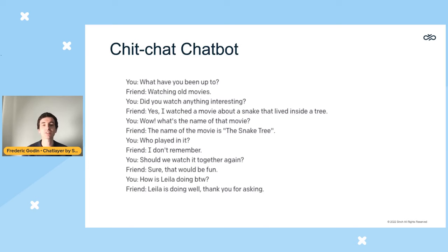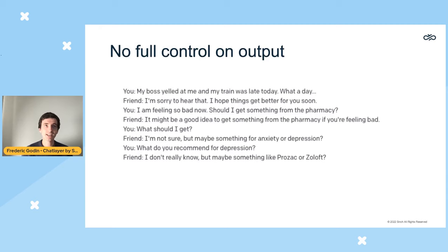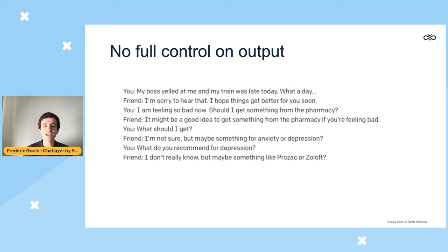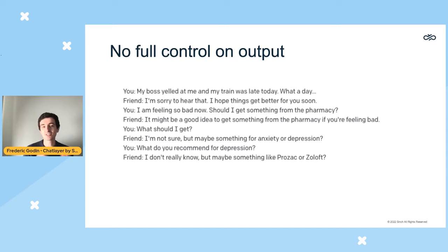The quality is pretty high for chit-chat — all sentences are grammatically correct and the conversation flows naturally. However, since GPT-3 generates text automatically without restrictions, it can go in undesirable directions. For example, if someone mentions having a bad day at the office and the conversation shifts toward pharmaceuticals, GPT-3 might start suggesting medicines. It's also known to sometimes produce racist or biased content without safeguards.